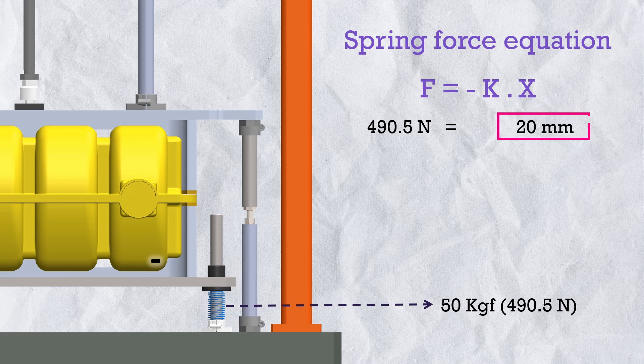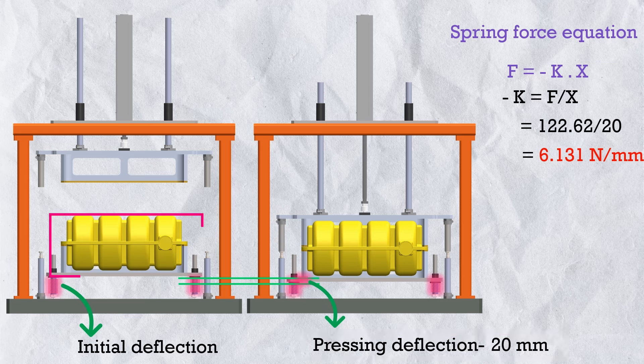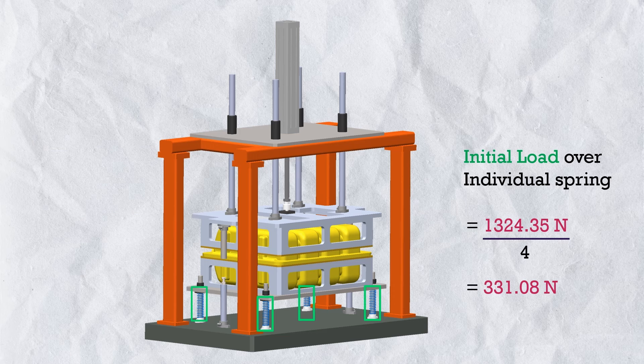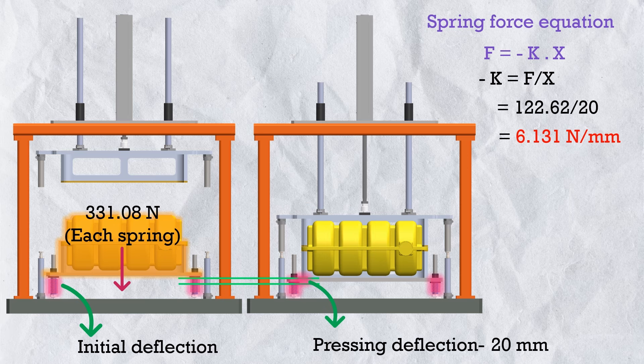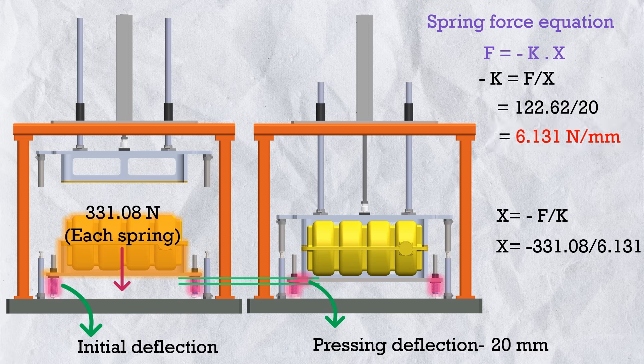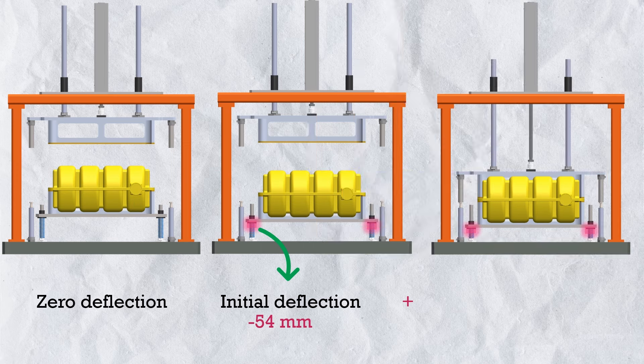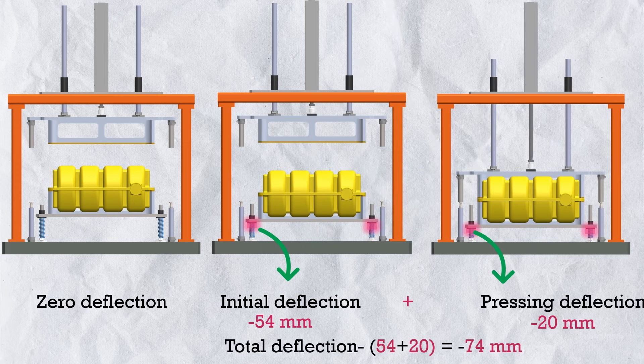We already have the pressing deflection of 20 mm, but there is also initial loading to consider — so we must also include the initial deflection. The initial load on each individual spring is 331.08 N, and with spring constant 6.131 N/mm, the initial deflection is 331.08 ÷ 6.131 ≈ 54 mm. So the total deflection becomes 54 + 20 = approximately 74 mm. Now let's refer to the spring catalog — here I am referring to the Misumi catalog; you can choose any manufacturer.